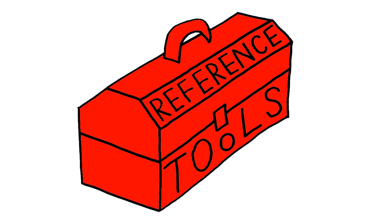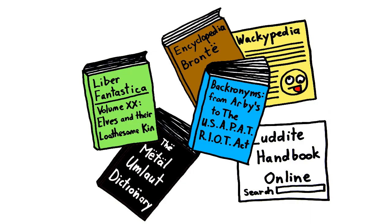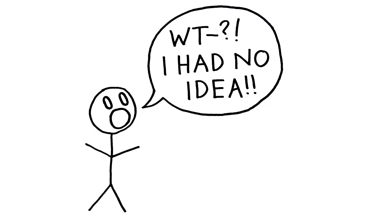Reference tools such as dictionaries, encyclopedias, handbooks, and bibliographies can help you gain a better understanding of the broad topic that your research or assignment topic is dealing with. The background information you find can help you understand the various aspects of any topic and help you to narrow in on a specific topic for your paper.